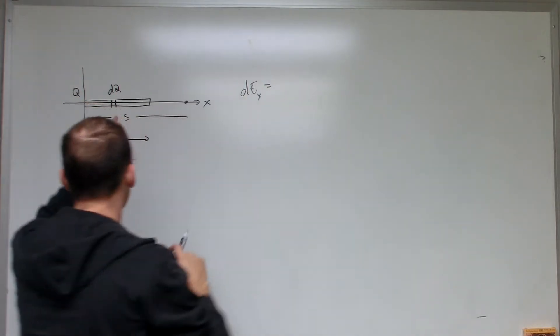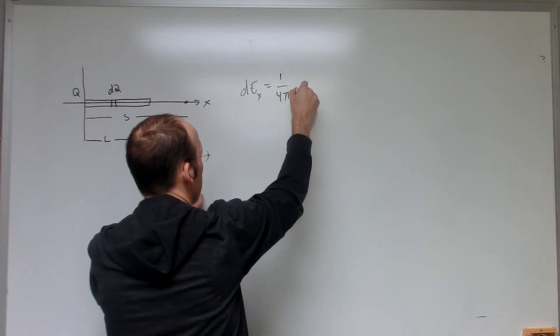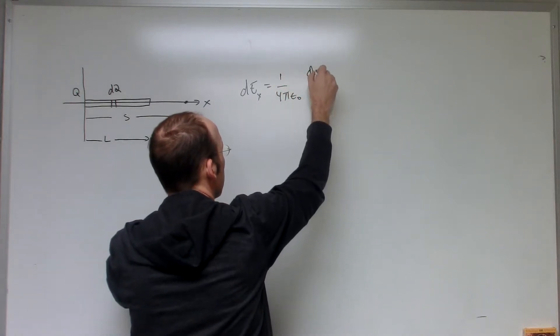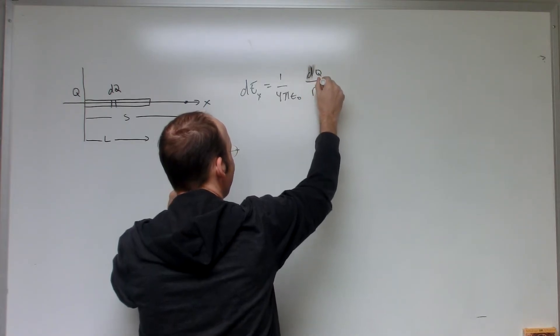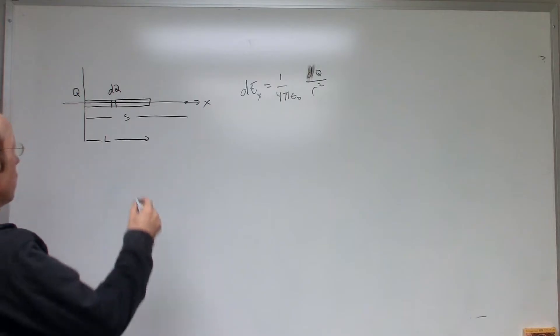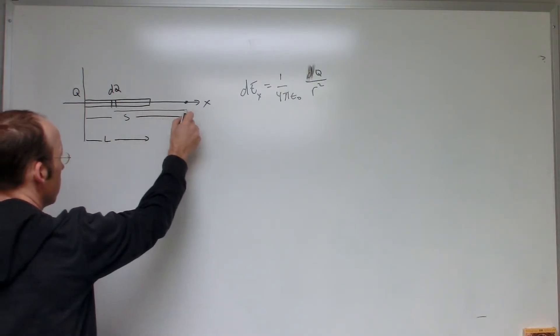It's going to be, this is just like a point charge, so it's going to be 1 over 4 pi epsilon naught dQ, that's a D, over R squared. That's the electric field due to a point charge, where this is going to be R. The distance from here to there is R.